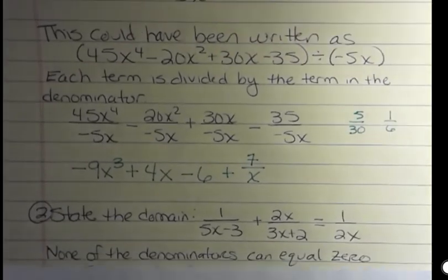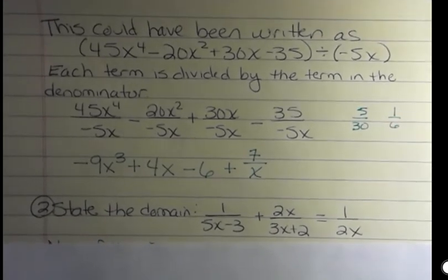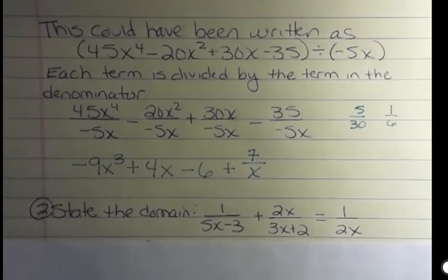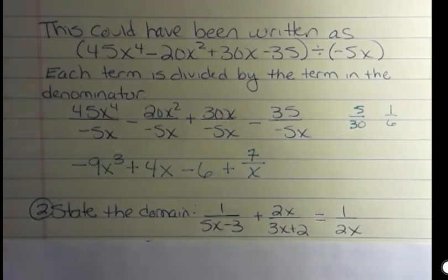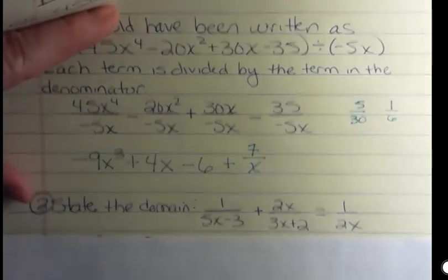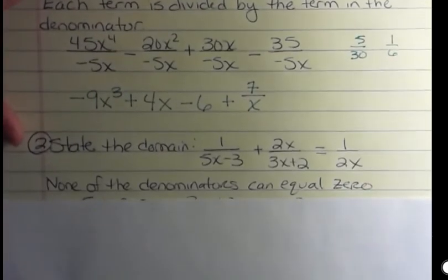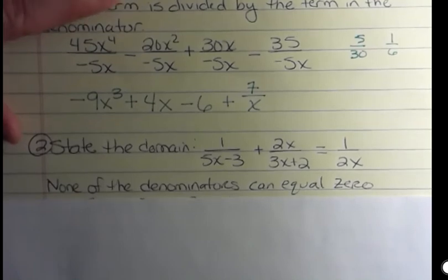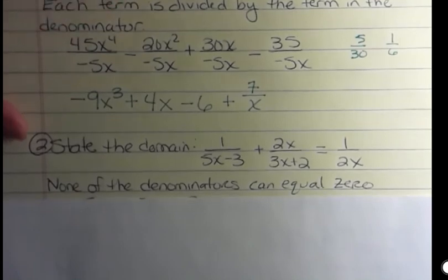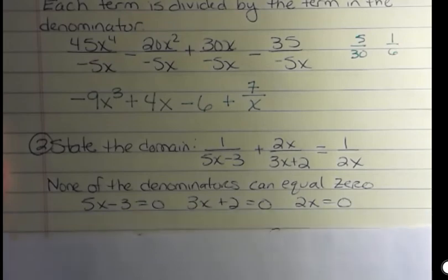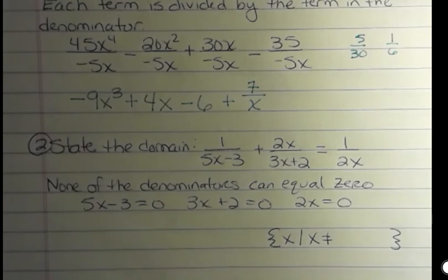Okay, the other thing in this one is given an equation, can you say what the domain is for this equation? And what I want you to remember about rational equations is that none of the denominators can equal 0. If you have a denominator that equals 0, then it's undefined. So we have to figure out what would cause that to happen. So we're going to set our denominators equal to 0 and solve.